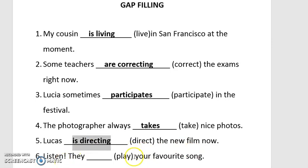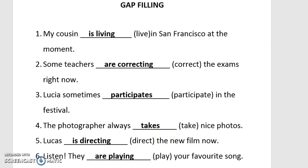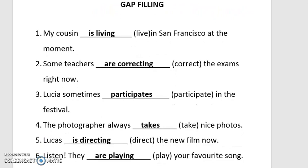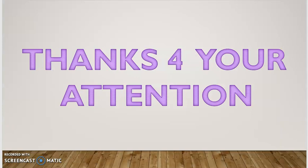Finally, number six: 'Listen, they __ your favorite song.' The word 'listen' acts as an imperative — an order — signaling a currently ongoing action. 'Play' means 'tocar' or 'reproducir.' This indicates a continuous action, so the answer is 'are playing.' 'Listen, they are playing your favorite song' — 'Escucha, ellos están tocando tu canción favorita.' It's happening now. That's all for today — thanks for your attention, don't forget to subscribe to my channel. Goodbye!